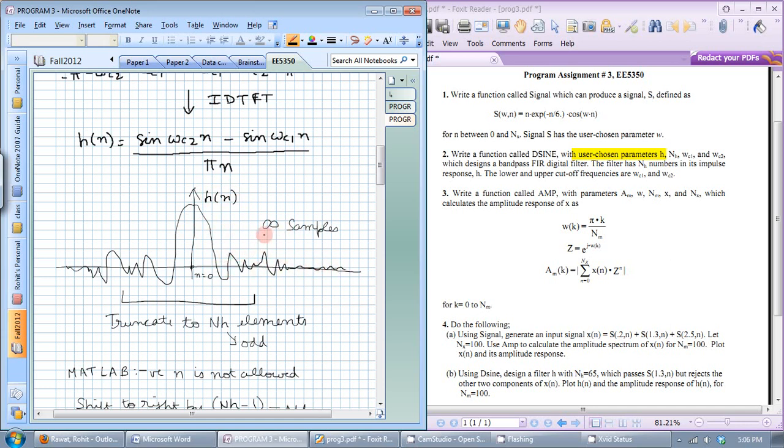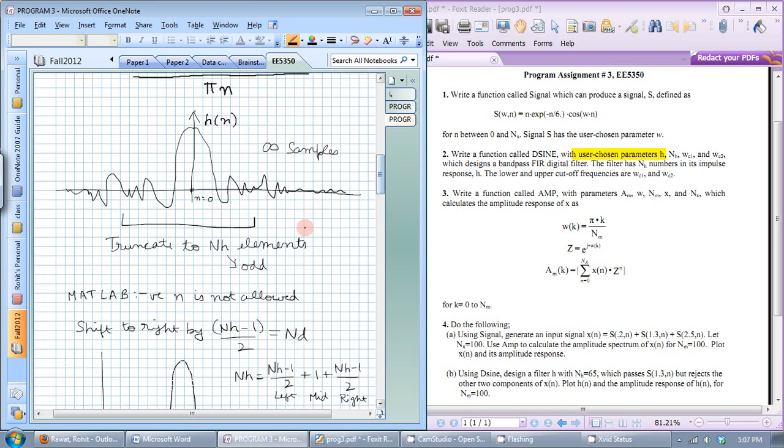But the thing is, it has an infinite number of samples and does not have any limits on it. So we have to truncate it to nH elements because then it becomes a finite impulse response system. So instead of taking these nH values, it's better to take the values in the middle.